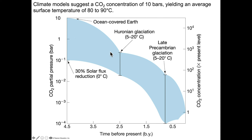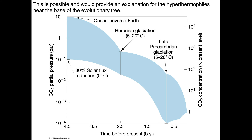Edging down from very high early CO2 concentrations, about 2.5 billion years ago we enter the Huronian glaciation, with surface temperatures estimated around 5 to 20 degrees centigrade. CO2 continues to decrease until we hit the late Precambrian glaciations, again with temperatures of 5 to 20 degrees, and then continues decreasing to the onset of the Pleistocene glaciations about 2 million years ago. This high early temperature would also explain the hyperthermophiles near the base of the evolutionary tree — bacteria that prefer high temperatures — lending credence to the idea.